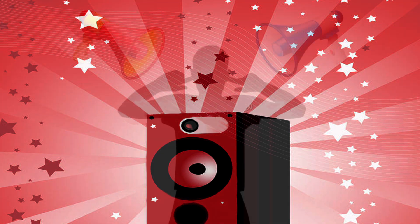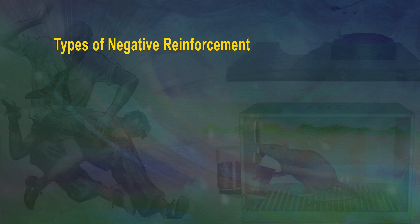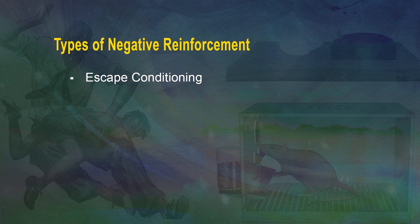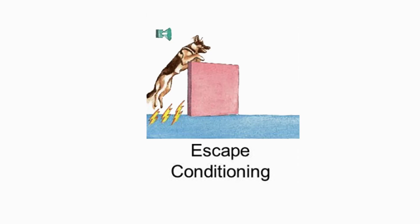From the previous example, the loud music was the negative thing that your assertive behavior got rid of. Two types of conditioning are based on negative reinforcement. One: escape conditioning — in escape conditioning, the behavior causes the negative event to stop.